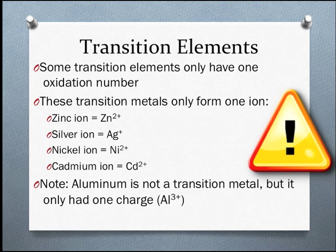Not all transition metals have multiple oxidation states. These transition metals—zinc, silver, nickel, and cadmium—only have one form of their ions. This is important because it means they're named just like any other monatomic ion. The Zn²⁺ is called zinc ion, for instance.